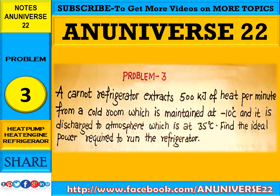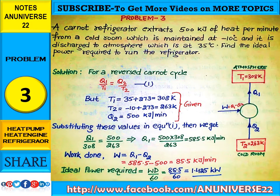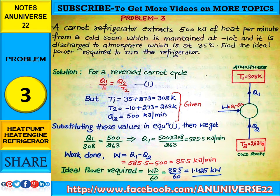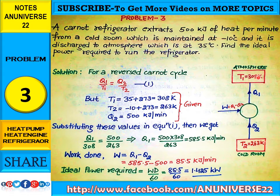Now we try to solve this problem. According to the statement, the diagram can be plotted as follows: T1 is 35 plus 273, that is 308 Kelvin — this is the higher temperature. T2 is minus 10 plus 273, that is 263 Kelvin — this is the cold room temperature. Q2 is the amount of heat extracted at T2, and W is the work needed to extract Q2 heat from the cold room. Q1 is the heat exhausted to the atmosphere at T1.